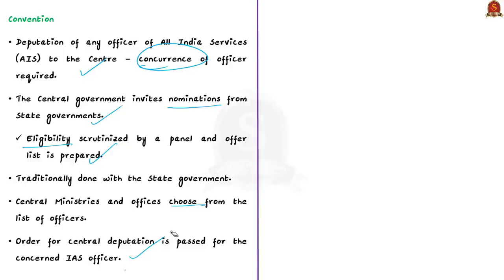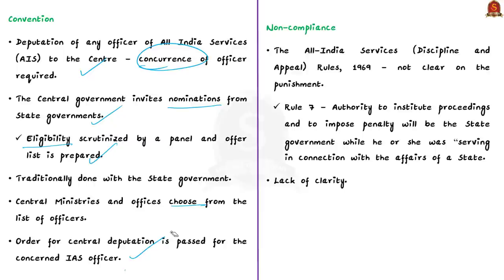If the officer refuses to comply with the order, the All India Services Discipline and Appeal Rules of 1969 is invoked. However, these 1969 rules are not clear on the punishment in such cases for deputation of cadre officers. Rule 7 in these 1969 rules says that the authority to institute proceedings and impose penalty will be the state government. So there is a lack of clarity on non-compliance of the order in this issue.